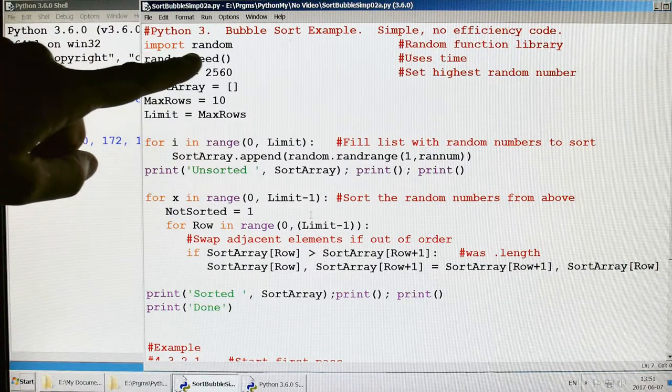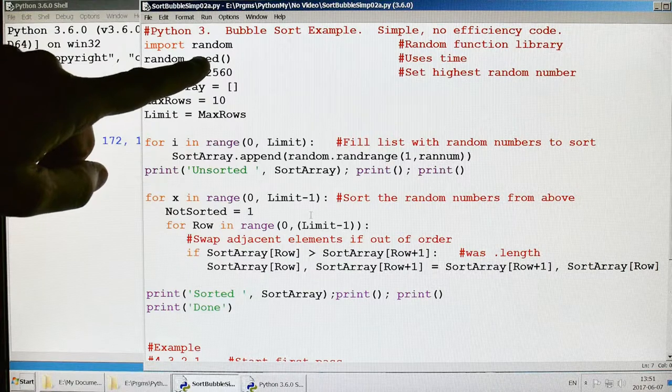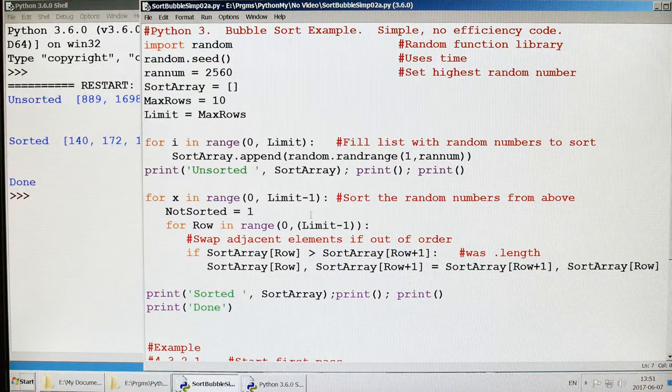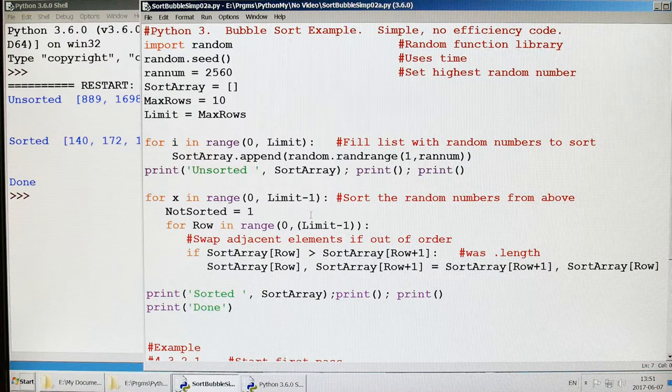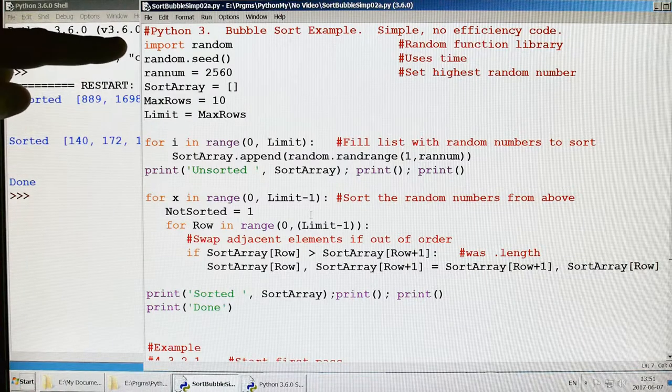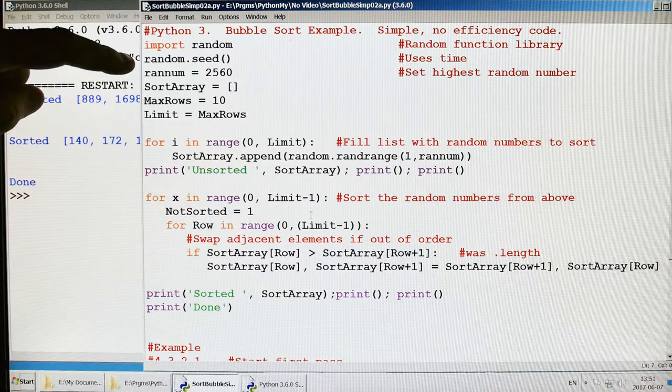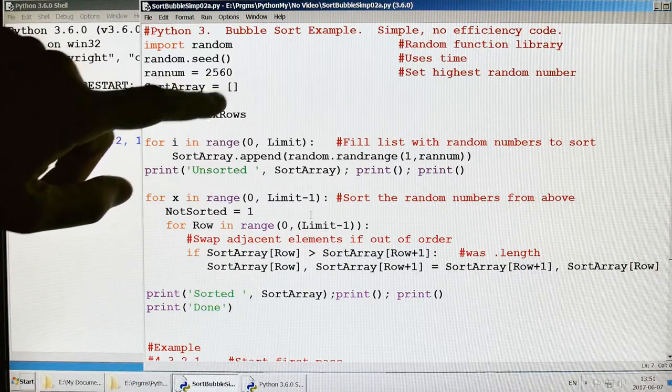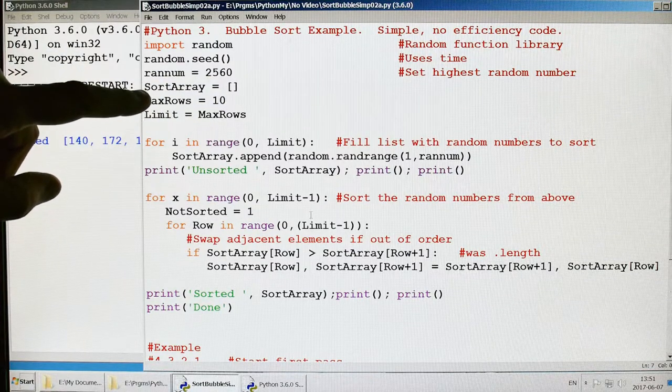So first of all, we're going to import the random. Most of this up here is so we can create a random set of numbers to sort. This doesn't really have anything to do with the bubble sort, but I need something to sort, so I'm creating my own list. This is random seed, random numbers. We're going to have numbers between 0 and 2560, and they can be duplicated by the way.